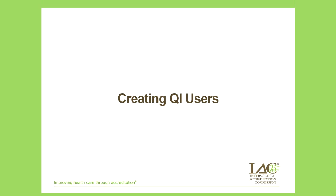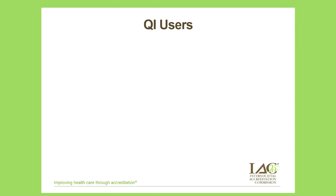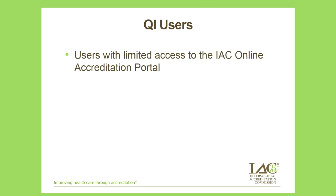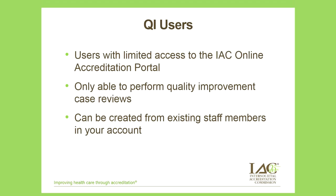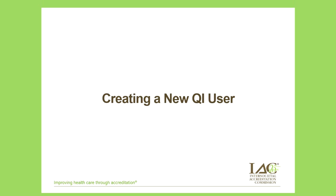A QI user is a new type of user that can be added to your online accreditation account with very limited QI-specific access to the portal. If you have staff members you'd like to involve in the QI process but don't want to give them full account access, you might consider making them a QI user. QI users can only perform quality improvement case reviews — they can't make accounting changes or update staff. These QI users can be created from existing staff members or as new users.